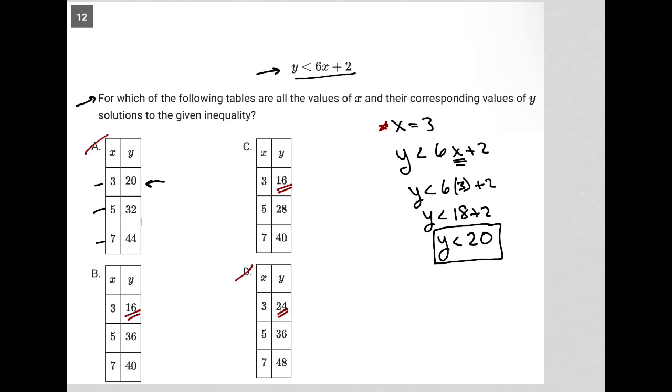Let's try x equals 5. When x equals 5, skip over those steps, I'd have y is less than 6 times 5 plus 2.